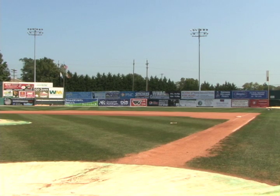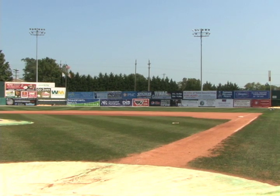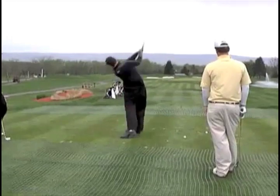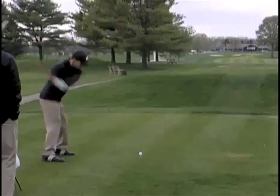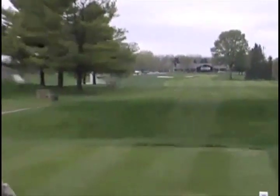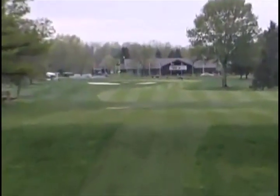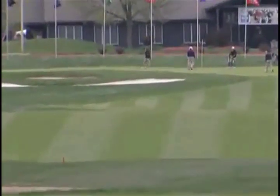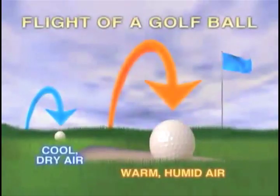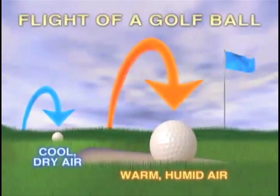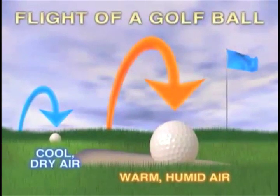For example, a golf ball or baseball will travel differently in Denver, Colorado compared to St. Louis, Missouri. At higher elevations, air has a lower density. When this happens, the ball can travel further. The lower the density causes less friction.